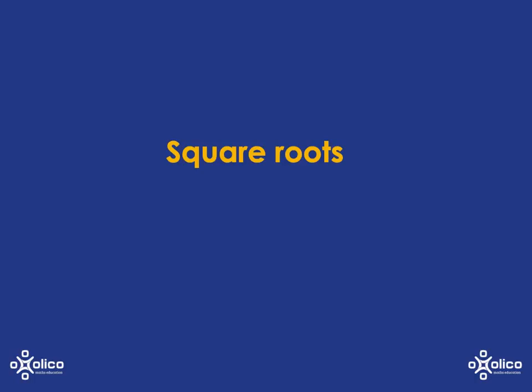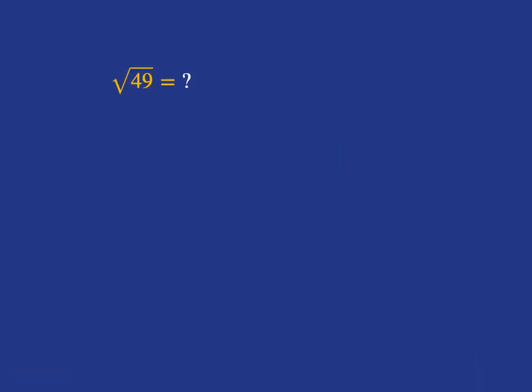Let's look at some square roots that involve algebra. Let's start with square roots with just numbers first, to remind ourselves of what square roots are. Square root of 49 — what we're asking is, what positive number multiplied by itself gives us 49? In other words, what squared is 49? You know that 7 times 7 is 49, 7 squared is 49, and so the square root of 49 is 7.